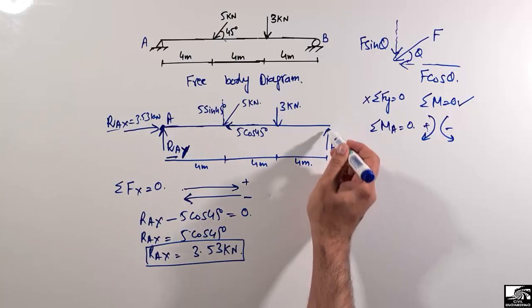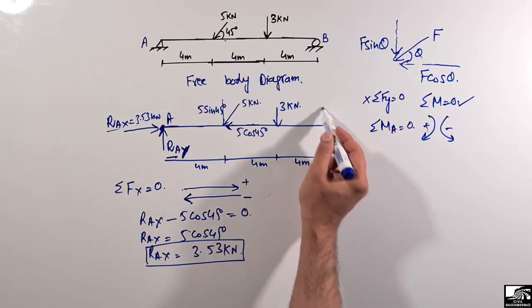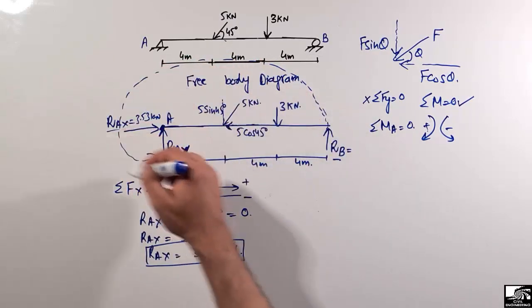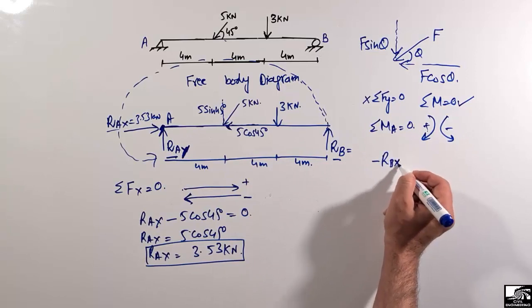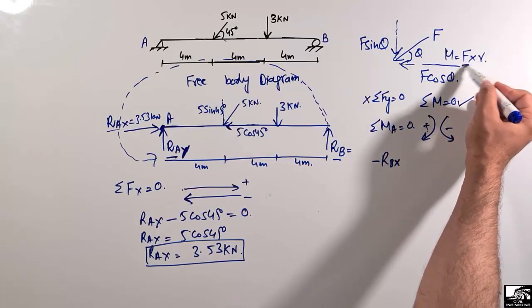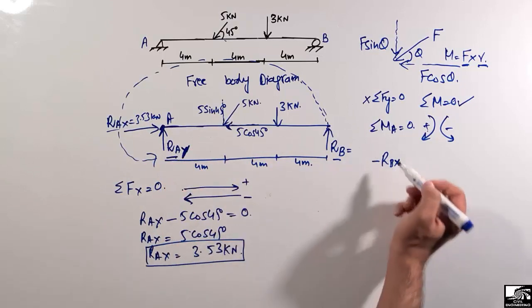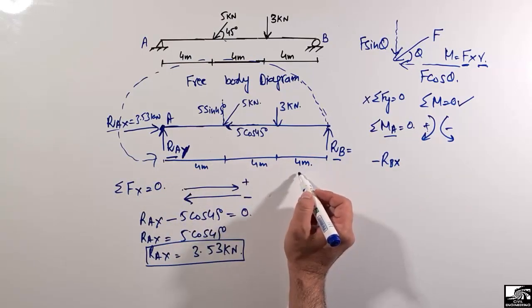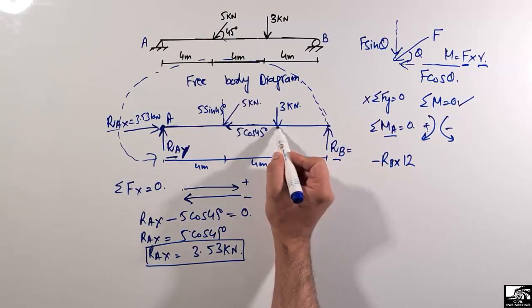The first force creating a moment about A is RB. Since RB acts upward, it produces a counterclockwise moment about A — so it is negative. The moment arm is the distance from RB to A, which is 4 + 4 + 4 = 12 meters. So the moment from RB is: −RB × 12.